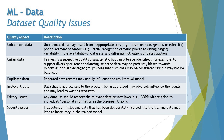Unbalanced data may result from inappropriate biases based on race, gender, or ethnicity; poor placement of sensors such as facial recognition cameras placed at ceiling height; variability in the availability of the data set; and differing motivations of data suppliers. Depending on the psychology and mindset of suppliers, you may have different expectations — all categorized as unbalanced data.